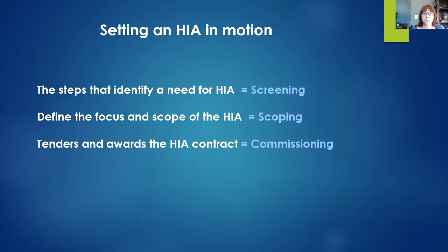When I'm talking about screening, I'll be talking about the steps you need to go through to identify if there is actually a need to do a heritage impact assessment, because not all projects will require this. Scoping is to define the focus and scope of the heritage impact assessment. And finally, commissioning often involves tendering and awarding of the heritage impact assessment contract — putting the team in place who will conduct the HIA.